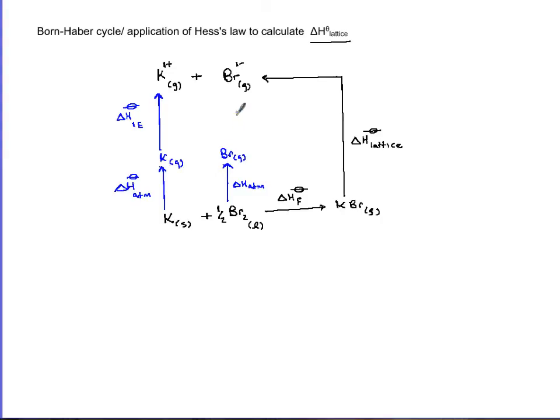Now bromine needs to become bromide, so this is a new terminology for you. We are going to gain one mole of electrons added to the gaseous atom. This is known as delta H electron affinity. The first one is usually exothermic.